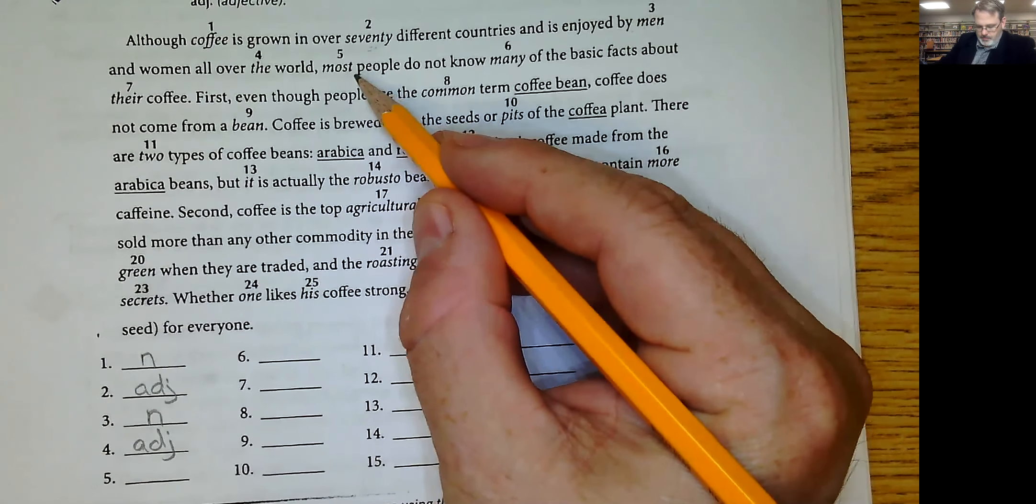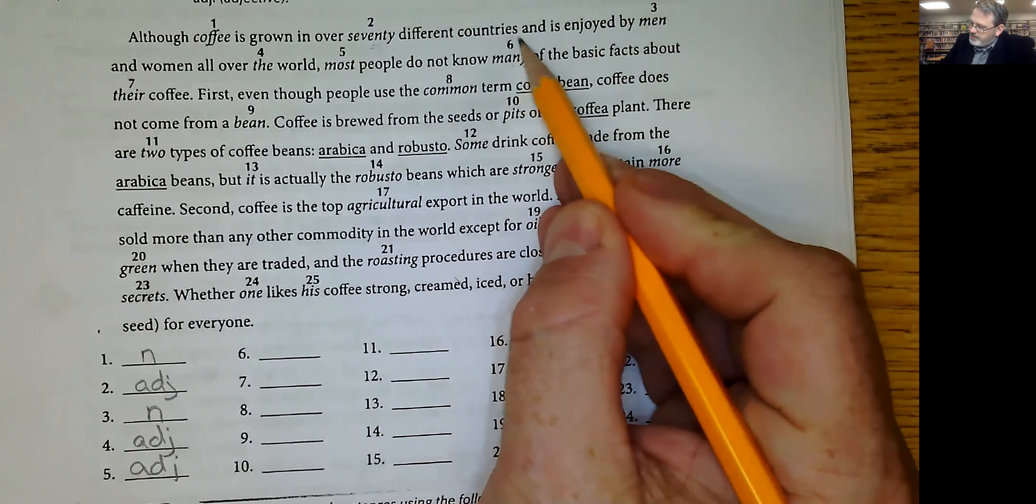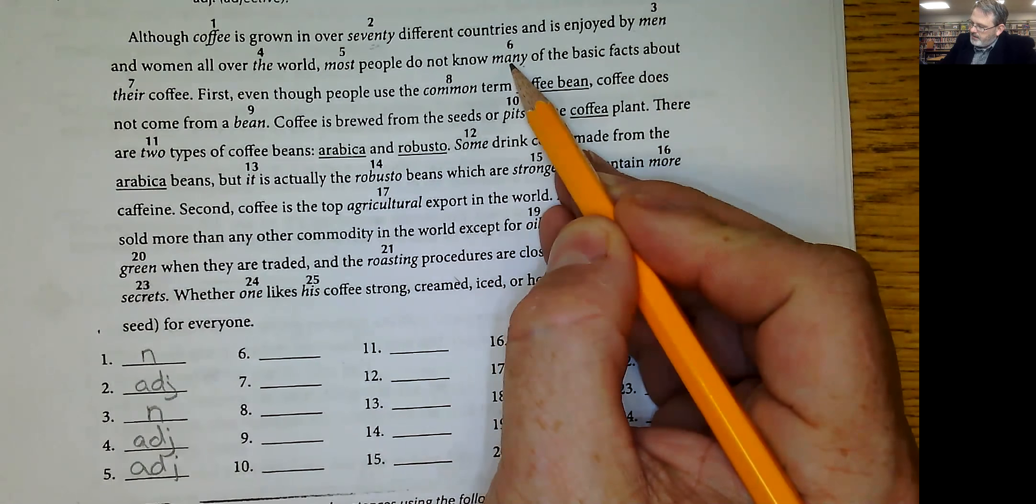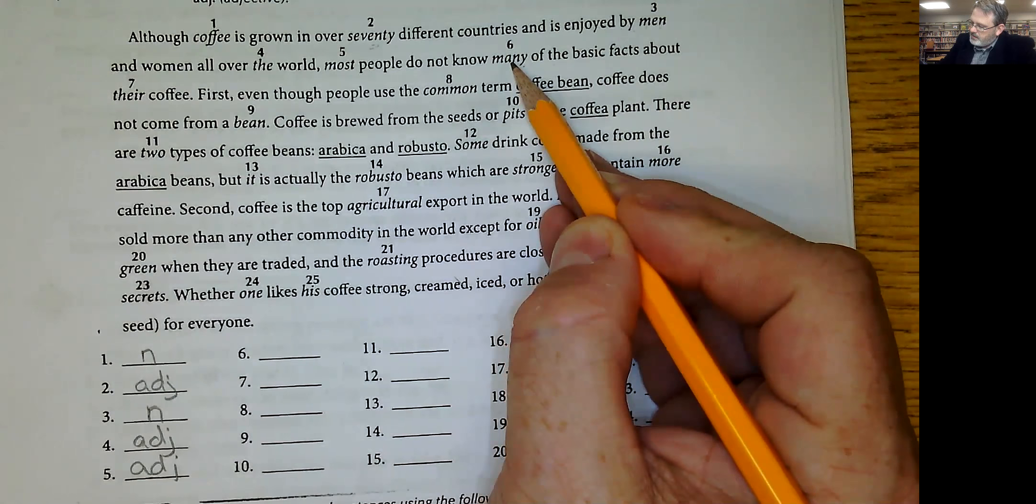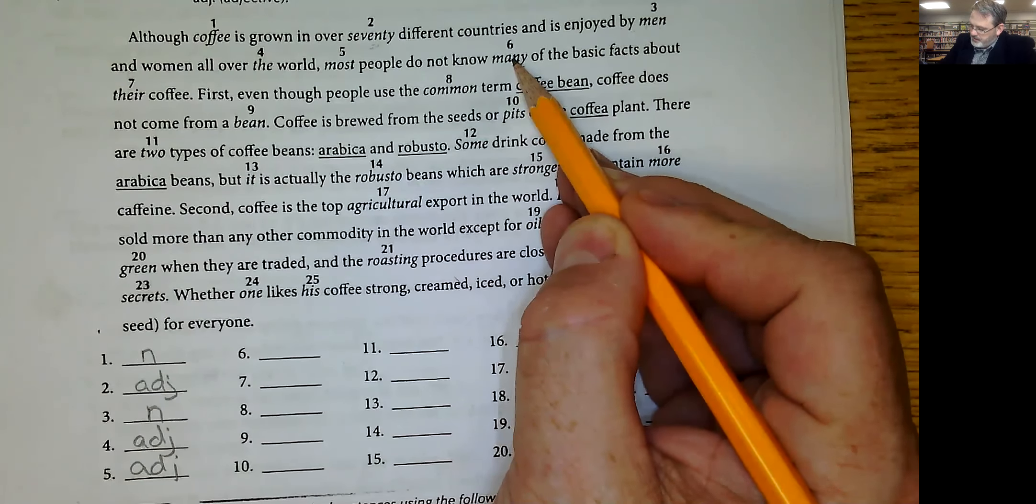They do not know many of the basic facts. Many is a pronoun, facts is the antecedent, or many represents a certain number of them at least. So yeah, many is a pronoun.